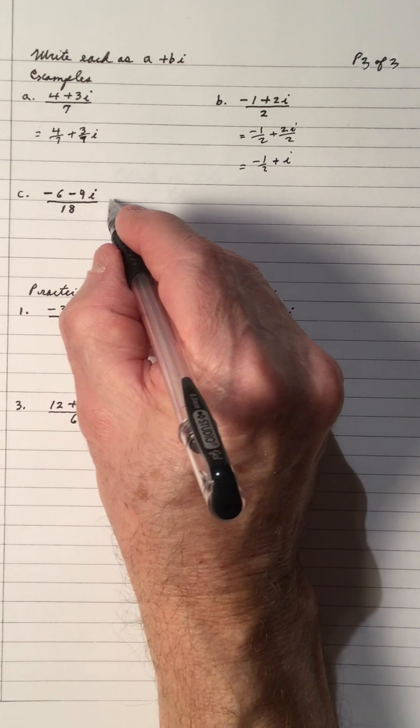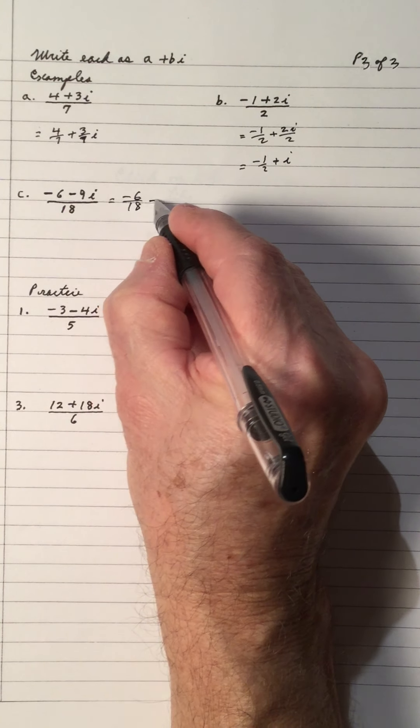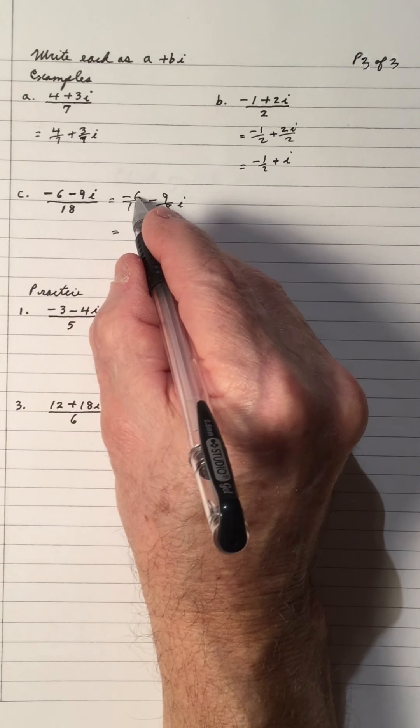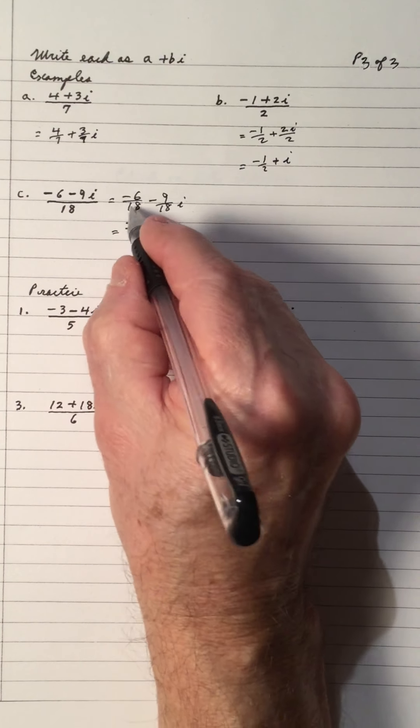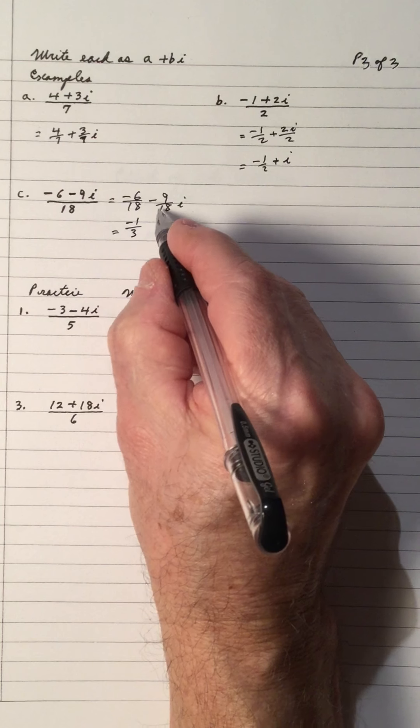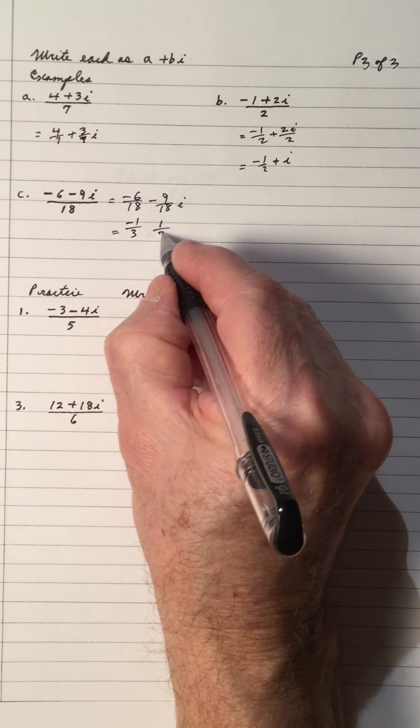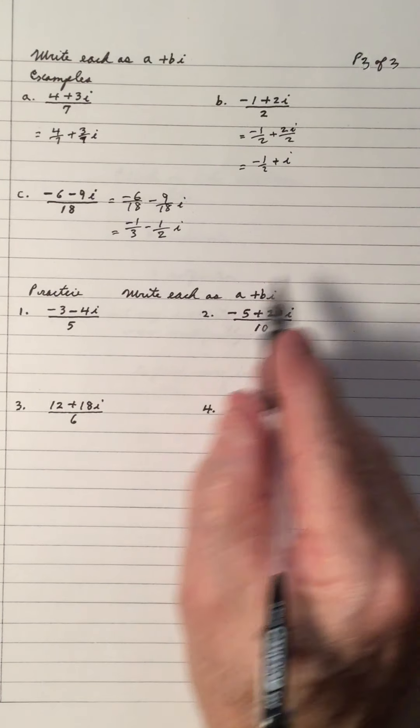And c, we have to divide both of them by 18. So, we get negative 6 divided by 18 minus 9 divided by 18i. And 6 into 18, 6 into 6 goes once. 6 into 18 goes 3, which is negative. 9 into 9 goes once. 9 into 18 goes 2. And it's a negative.